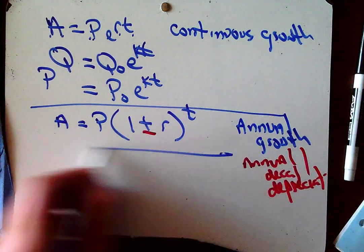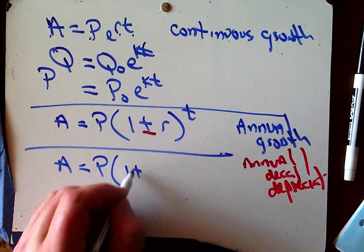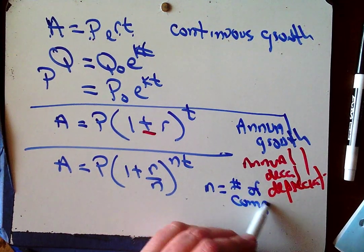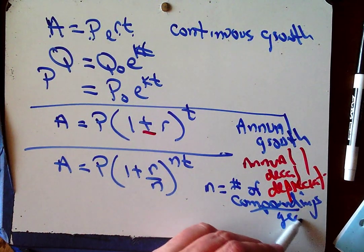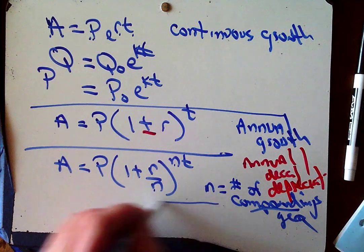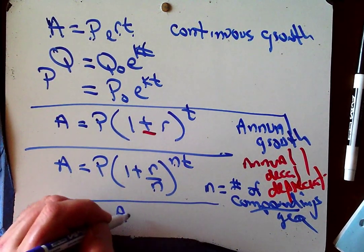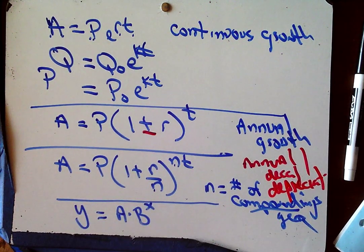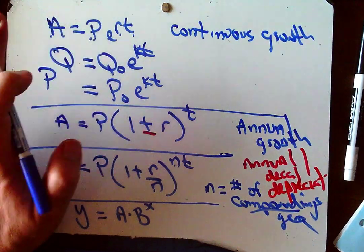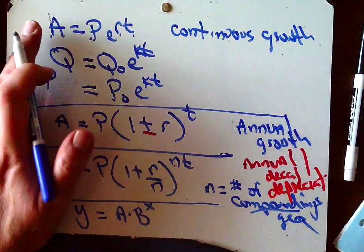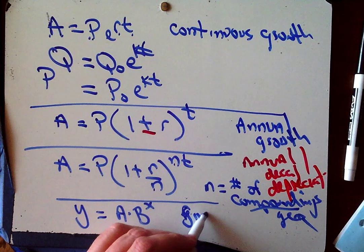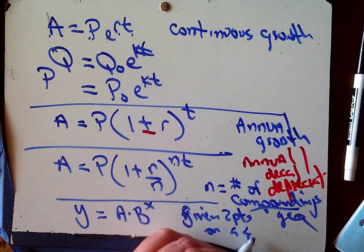We could have our compounded interest formula: P times one plus R over N to the NT, where N is the number of compoundings per year. If we're compounding monthly, N is 12, so we put 12 in both places. Finally, there's a formula I use quite a bit when asked to write the equation — going backwards problems. Given two points on a graph, I usually reach for this form instead because the algebra works out more straightforwardly.